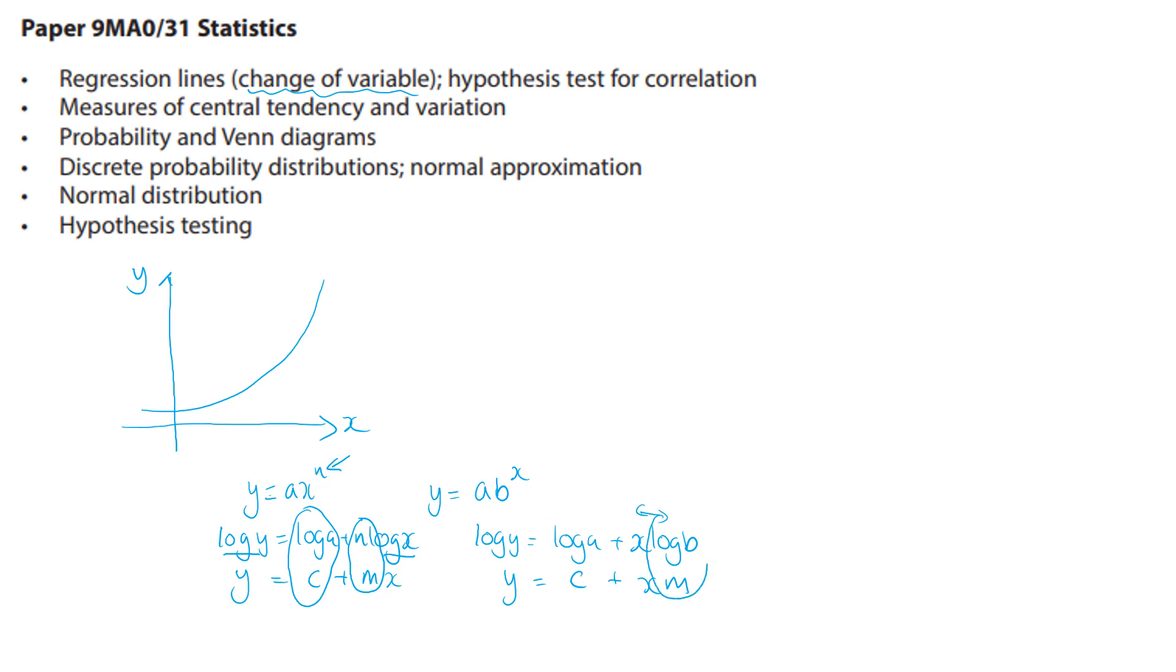But with the other type, if we do y equals mx plus c, then you can see that the log b, so this b here when we get our equation of a straight line, the constant that's in the log b position is the gradient, but in order to put it back here we're going to have to unravel the log. And again the log a is going to be our y-axis intercept, so sometimes you're asked to interpret but just be clear on which type that you have got.